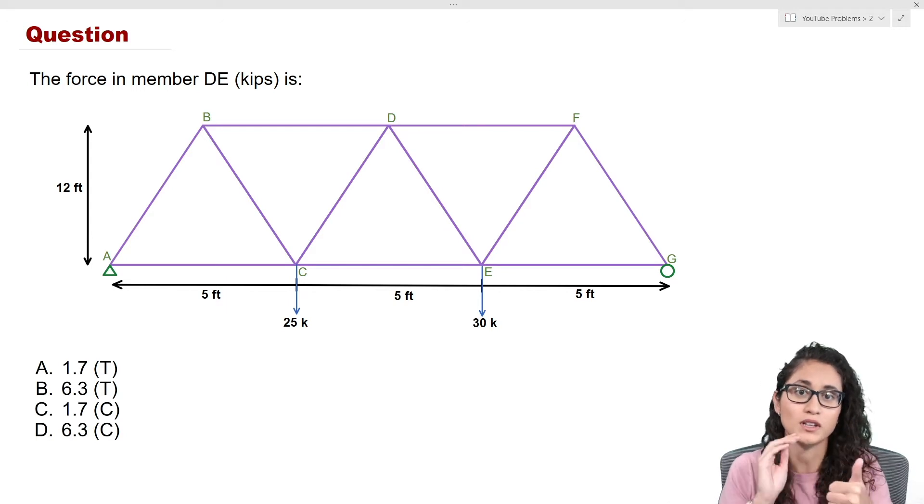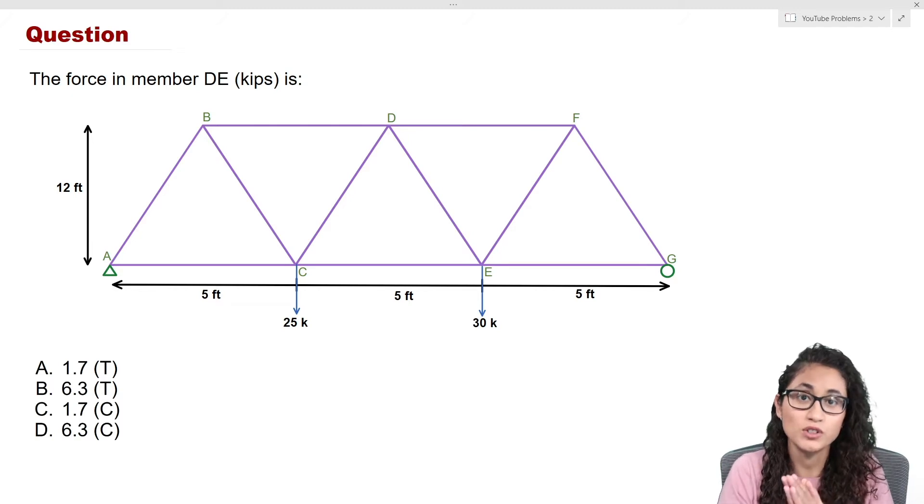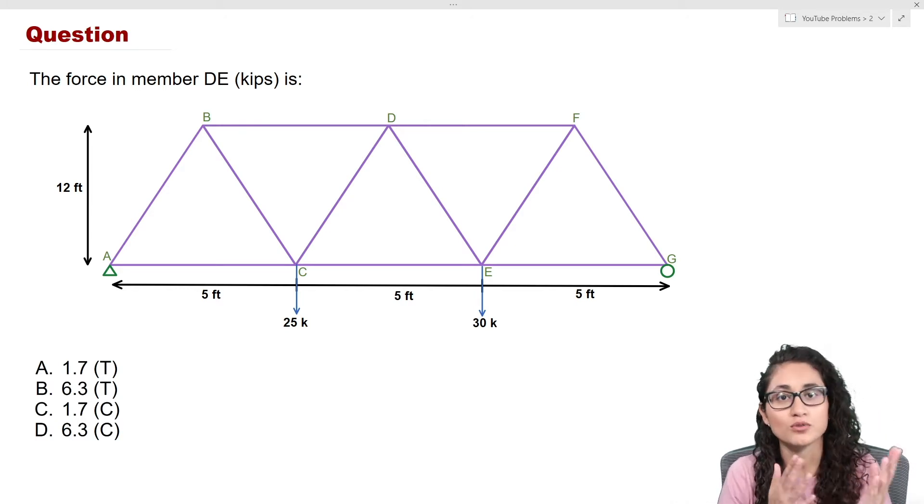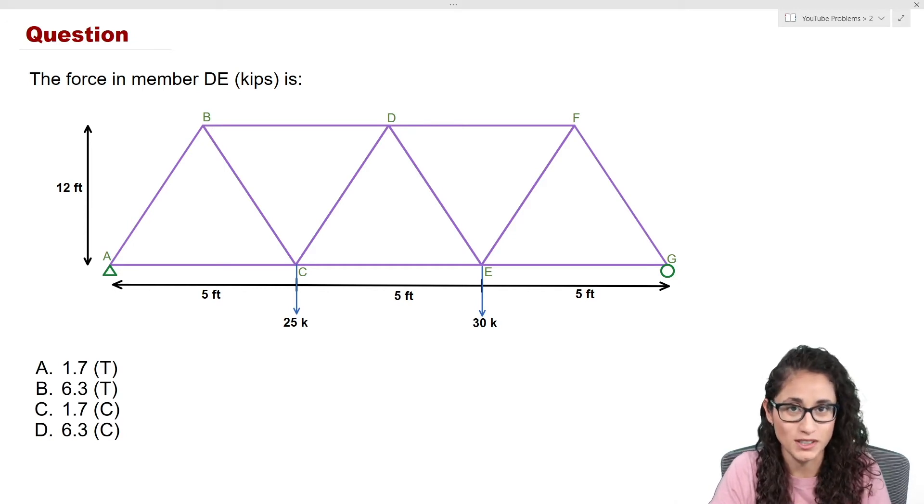To find the force member in DE, the first thing I recommend is cut in a way where you can find force DE. Once you cut, then you're going to draw all the forces that are going through that cut. For member DE you gotta be careful because it's a diagonal force, so it will be easier if you break it down into two components X and Y. That way you can see how many unknowns you have and then you can decide if you should take the moment or just do the summation of forces on the Y or the X. Pause the video, give it a try, and I will see you in a little bit.